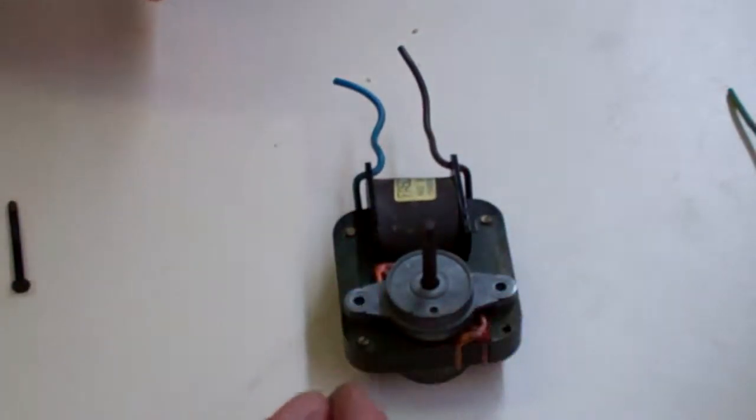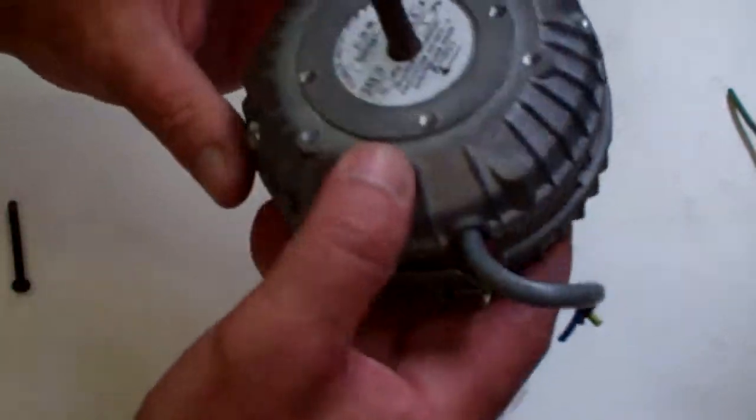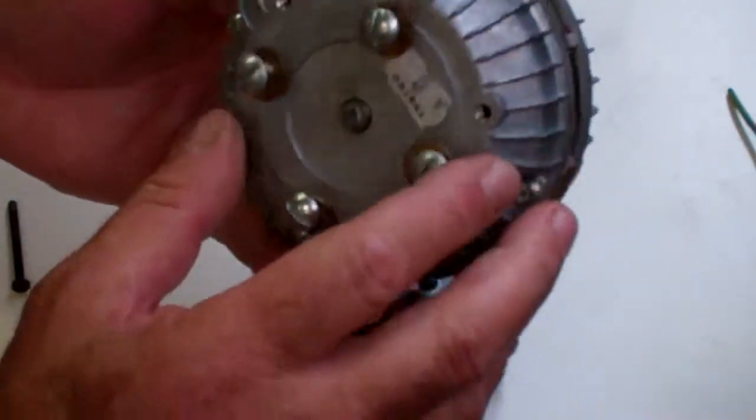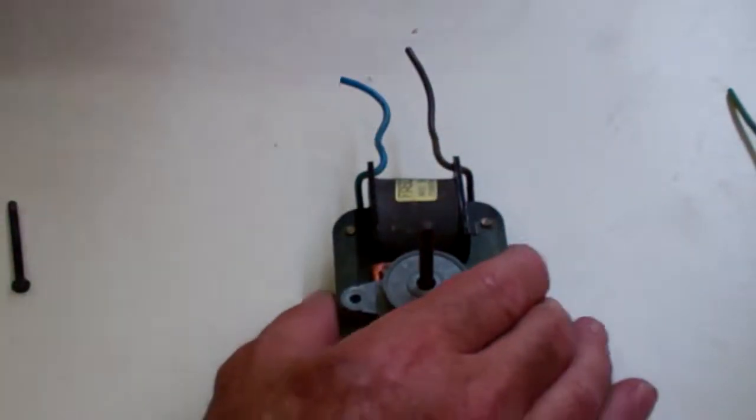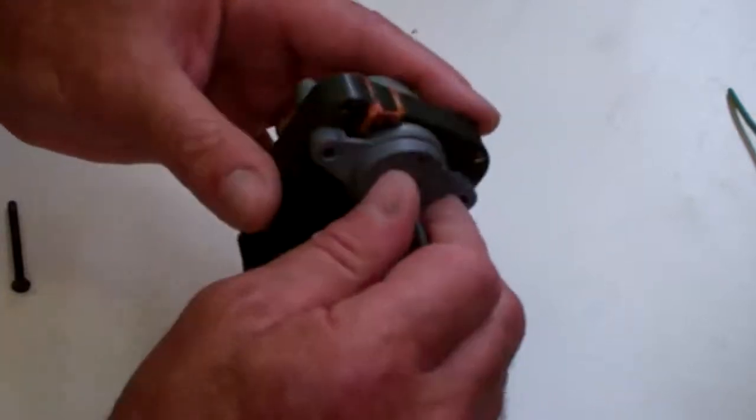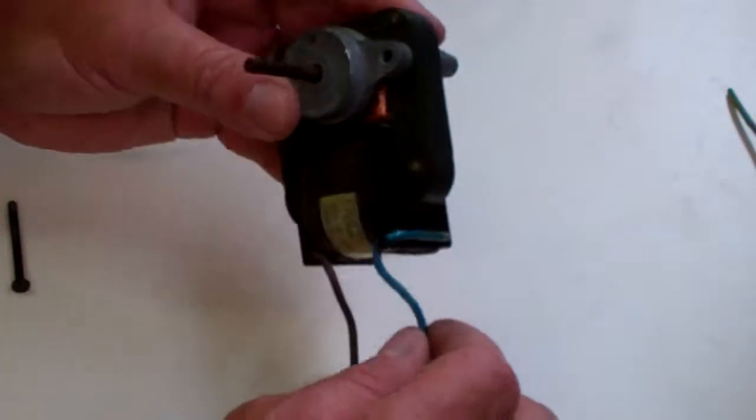I've got two basic types here. One is a totally enclosed motor so we can't really see the operation inside, so we've decided to use the naked type motor that I have here which allows us to see the components.